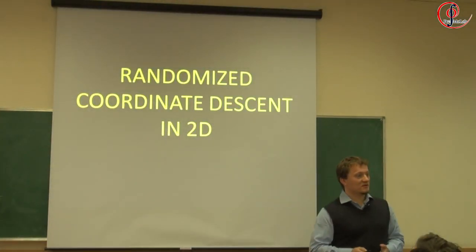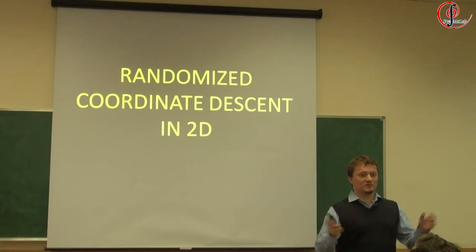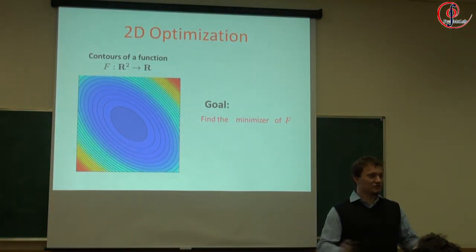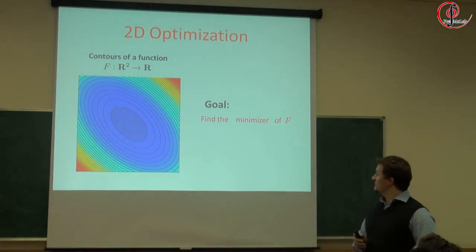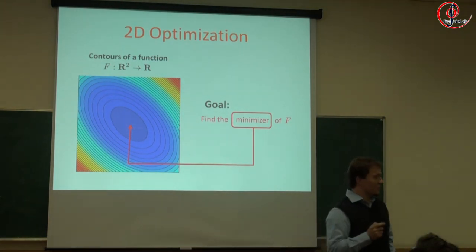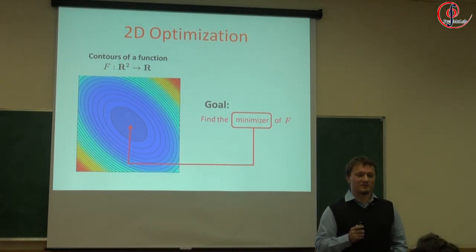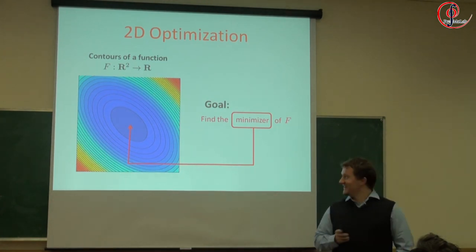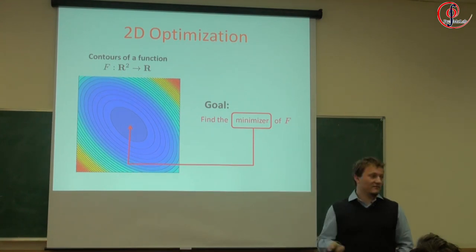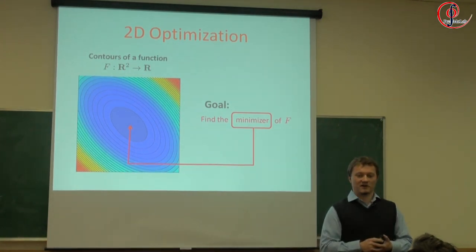You said you know what coordinate descent is, so let me briefly review this in 2D, which will lay down the foundations of what I'm going to talk about. So in 2D optimization — this is the big data optimization talk, so I have to start with 2D — you have a quadratic function, there's this quadratic well, and you want to get to the bottom of the quadratic function, so you want to minimize this function.